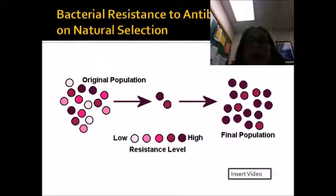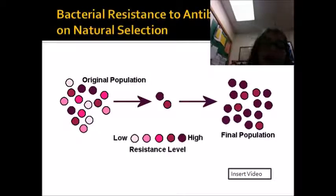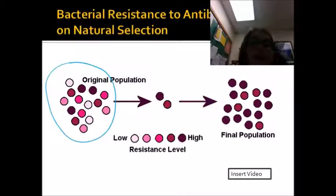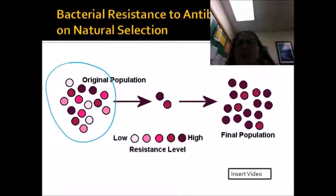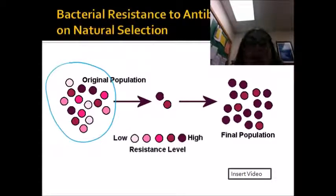A common example of how humans have influenced evolution is bacterial resistance. When we get strep throat, we have a variety of bacteria that grow and reproduce in our throat. We go to the doctor, get diagnosed with strep throat, and take antibiotics. The antibiotic prescription bottle tells you to make sure you finish the prescription all the way through, because you are introducing the environmental pressure of an antibiotic — something that's going to kill the bacteria.